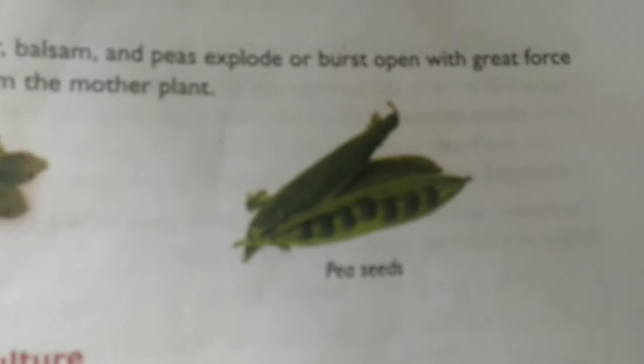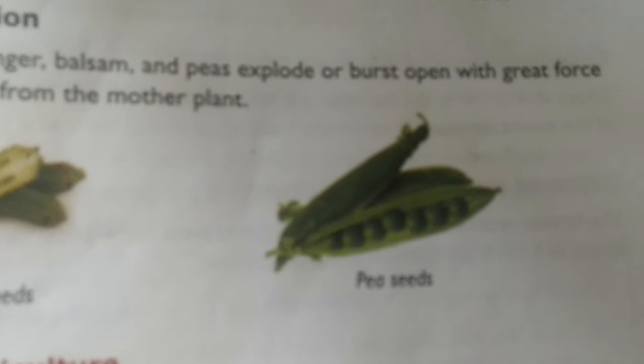The last is dispersal by explosion. Some seeds have a leathery covering or are found inside pods that explode or split open when exposed to the sun, when they dry up, or even when they are touched. When the pods burst open, the seeds are scattered far away from the parent plant. Examples: pea seeds, balsam, etc.